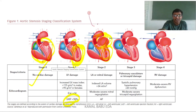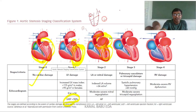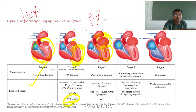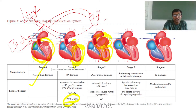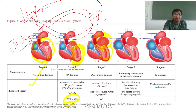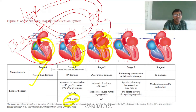Let me explain the normal circulation: the heart has four chambers — right atrium, left atrium, right ventricle, and left ventricle. Deoxygenated blood from the body enters the right atrium, goes to the right ventricle, and is carried to the lungs. Oxygenated blood returns from the lungs into the left atrium, then the left ventricle, and then out to the body.